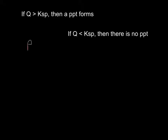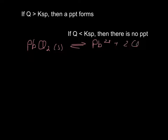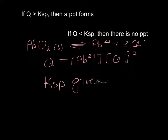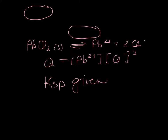For instance, let's say we have the reaction PbCl₂ breaking into Pb²⁺ and 2Cl⁻. Q for this is the same as Ksp — so the concentration of Pb²⁺ times the concentration of Cl⁻ squared. Then we compare Q to the Ksp, which will be given or found in a table. If Q is greater than Ksp, you get a precipitate. If Q is less than Ksp, there's no precipitate. Q is the same thing as Ksp, except for conditions where we don't know if we're at equilibrium.